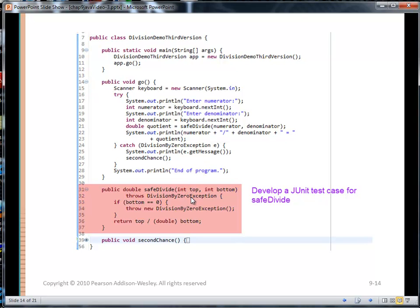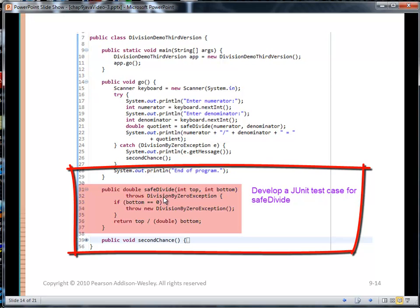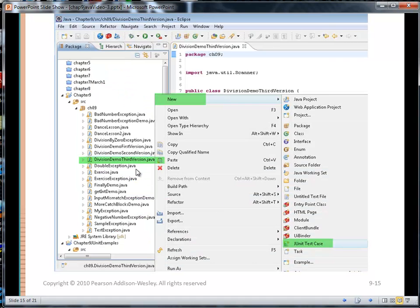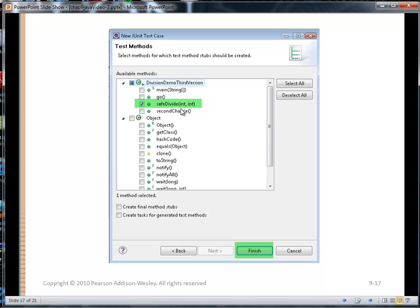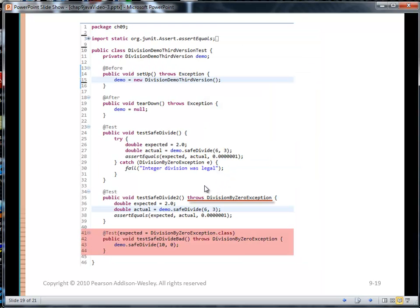So let's go back to our example, division demo third version. And I'm going to want to test to see if the safe divide method that has declared that it throws division by zero exception does in fact throw it successfully if I give it a value of zero for bottom. So I'm going to go into JUnit, create a JUnit test case for division demo third version. I'm using JUnit 4. I've asked for a setup and a teardown method. And I'm only going to test or ask for a stub on safe divide.